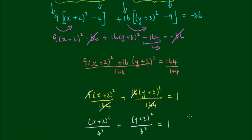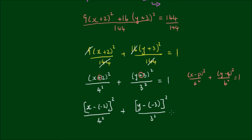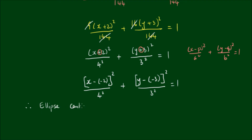We are close to the standard form x minus p all squared over a squared plus y minus q all squared over b squared equals 1. Since we have pluses instead of minuses, we express them as double negatives: x minus negative 2 all squared over 4 squared, plus y minus negative 3 all squared over 3 squared, equals 1. Therefore this is an ellipse centered at negative 2 and negative 3, with semi-major axis 4 and semi-minor axis 3.